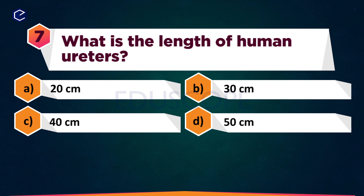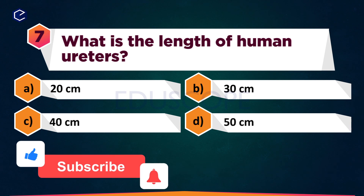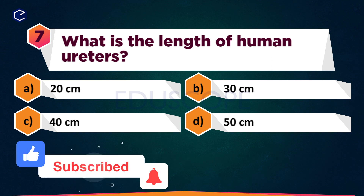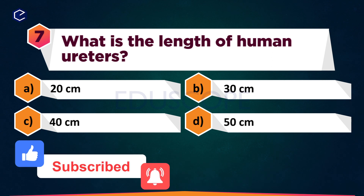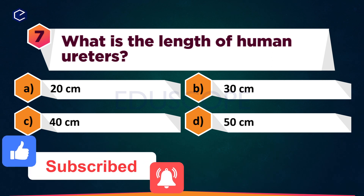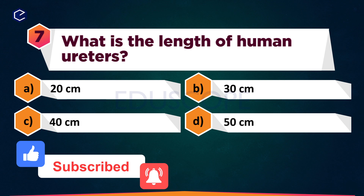What is the length of the human urethra? A: 20 cm, B: 30 cm, C: 40 cm, D: 50 cm.